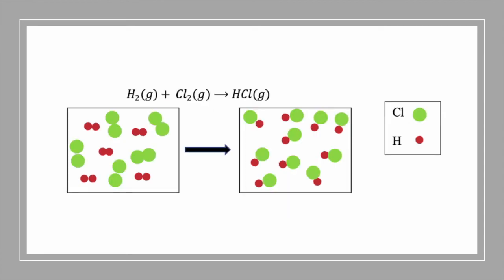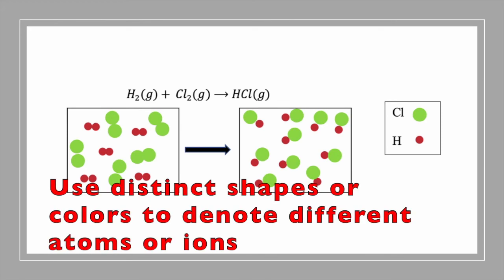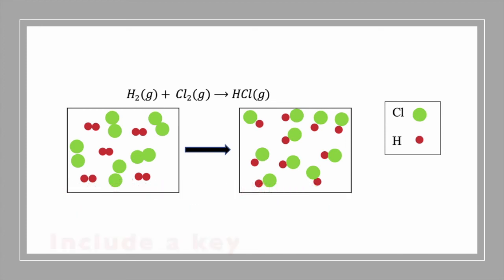When you're drawing particle diagrams that include different types of atoms, it's important to make sure you use distinct shapes or colors to denote different types of atoms or ions. Also, include a key to indicate which shape or color represents which atom.